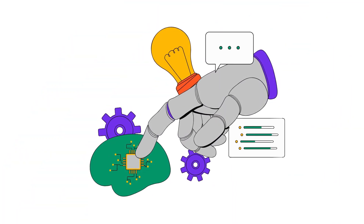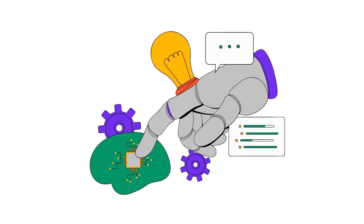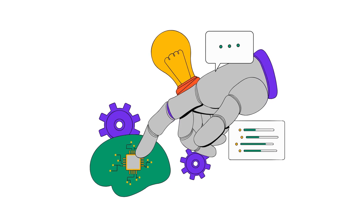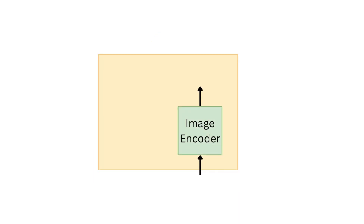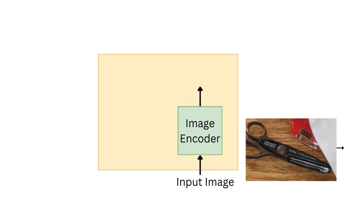Let's delve into the intricate architecture of SAM, revealing the mechanisms that set it apart in the realm of image segmentation. At its core is the image encoder, a robust component that takes in images of specific sizes and transforms them into a 64 by 64 multi-channel feature map with 256 channels.